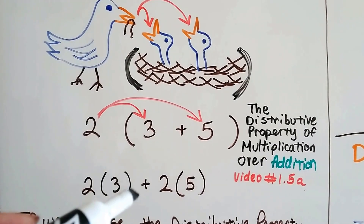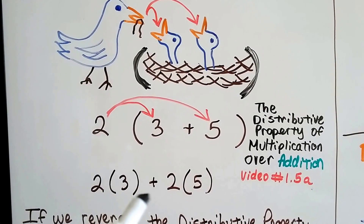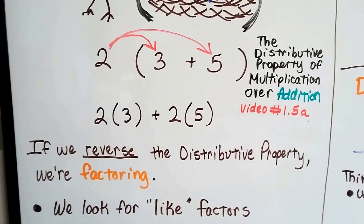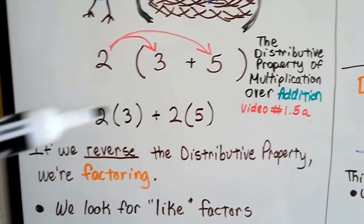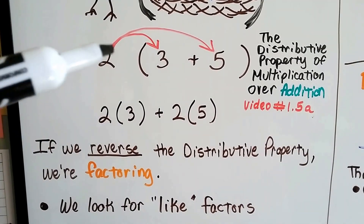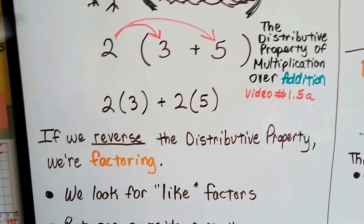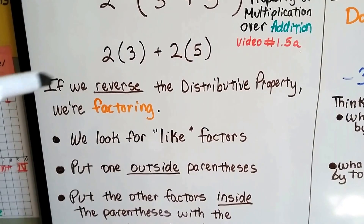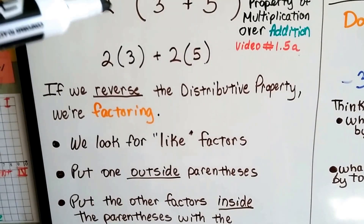We keep that plus sign — that's the addition. We also did it over subtraction where there was a minus sign. If we use the distributive property in reverse, we're factoring. If we have 2 times 3 plus 2 times 5, we can see that 2 is a factor for both of them. We put 2 on the outside of the parenthesis and put the 3 plus 5 on the inside. That's factoring — we look for like factors and put one factor outside the parenthesis.